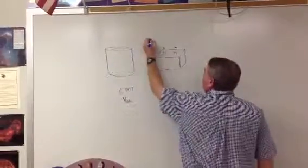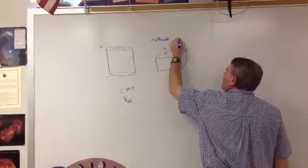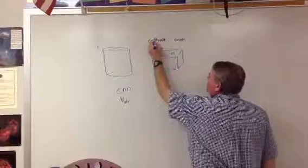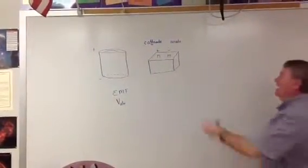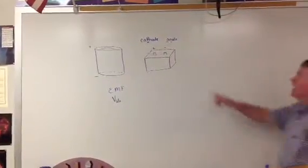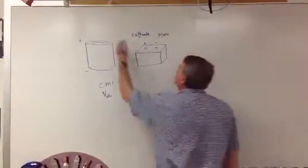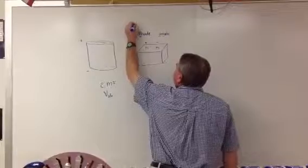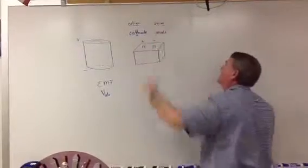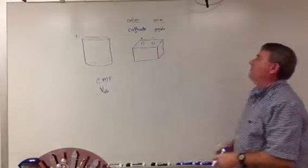The positive terminal is called the cathode, and the negative terminal is called the anode. You can remember this because cathode has the T in it, so that's a positive sign. And I always remember anode as 'A negative node,' so A is negative. You can also think back to chemistry — cation is a positive ion, and anion is a negative ion — to help you remember cathode and anode.